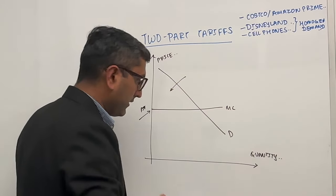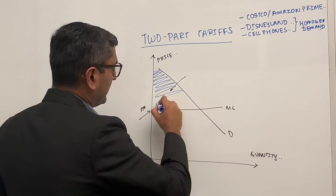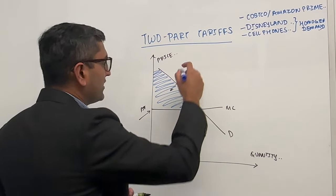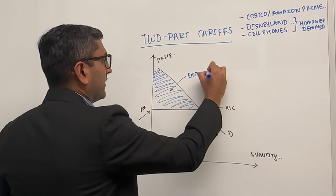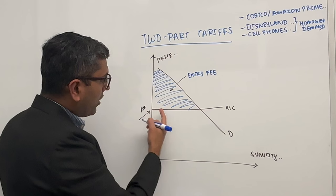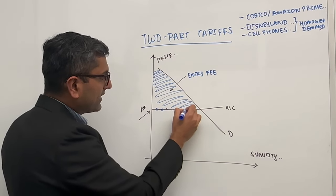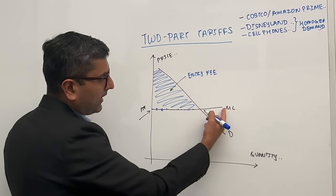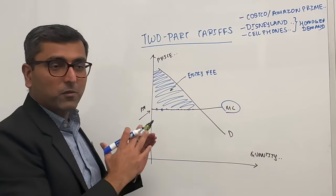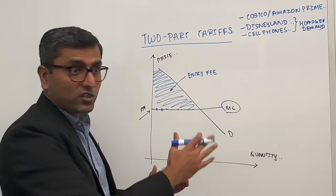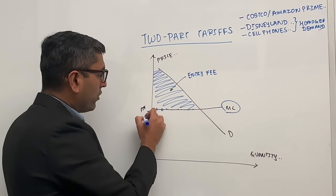So this area is basically the consumer surplus. This is the consumer surplus. You would charge them this as your entry, and then again use this quantity or whatever the quantity is, charge them for the quantity that they use based on your marginal cost, meaning whatever it costs you, you're going to charge them at the margin. And so when you have your usage fee as your marginal cost.